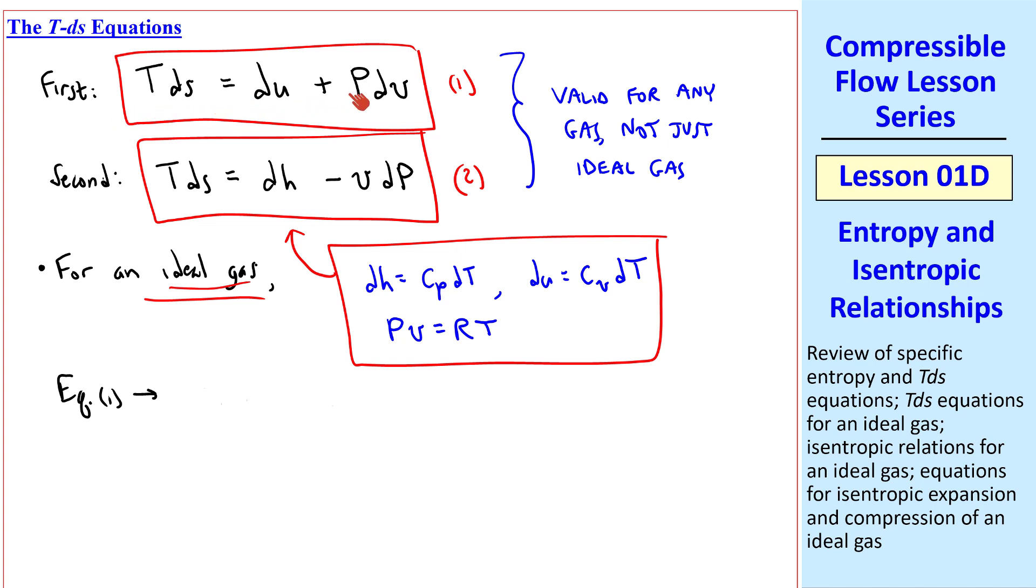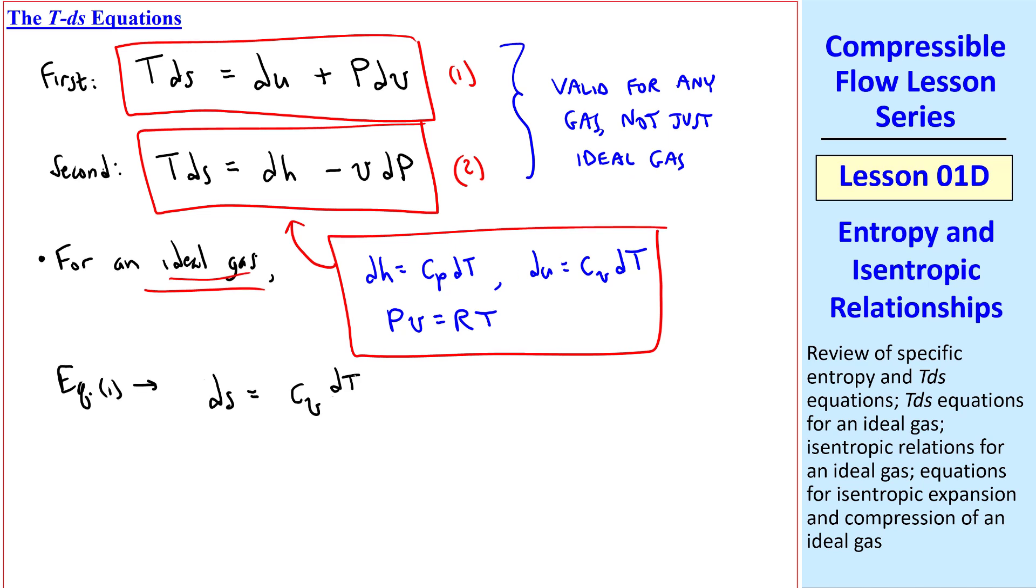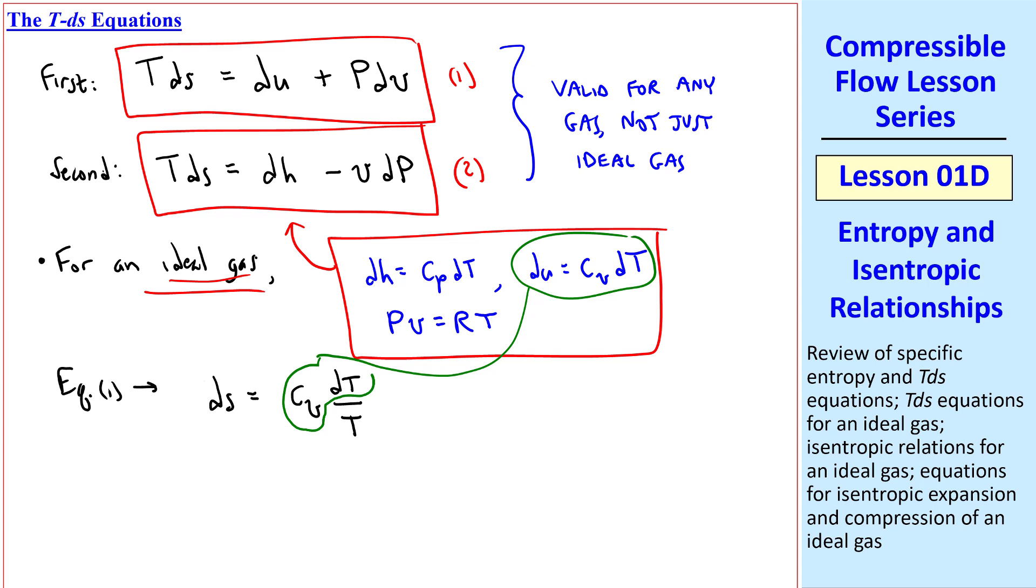Let's take the first TDS equation and divide by t. We get ds equals cv dt divided by t, where we've plugged in our expression for du, plus rt over v dv over t, where we've plugged in our ideal gas law for pressure. The t's cancel, so ds is cv dt over t, plus r dv over v.